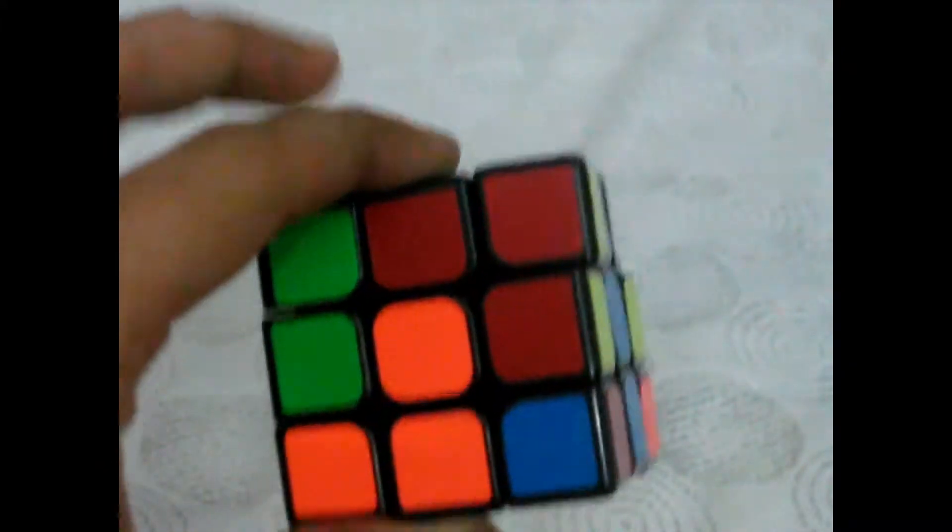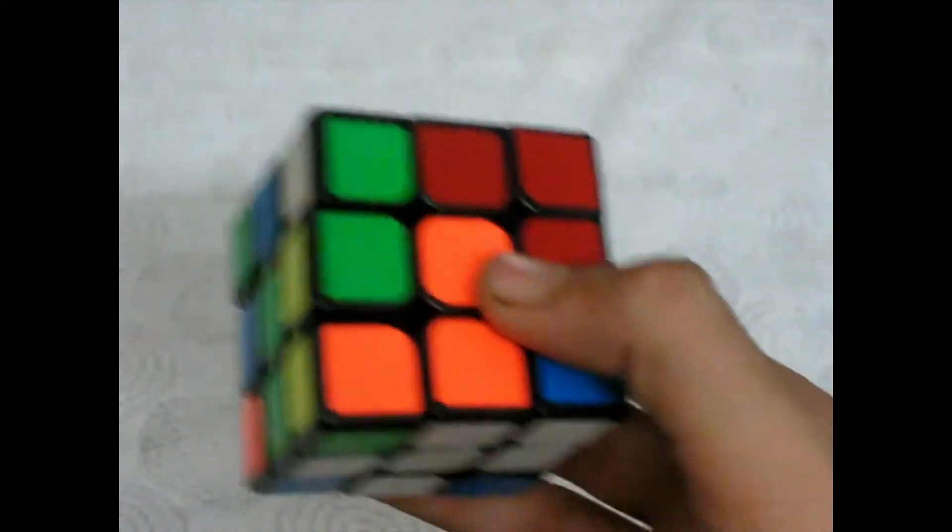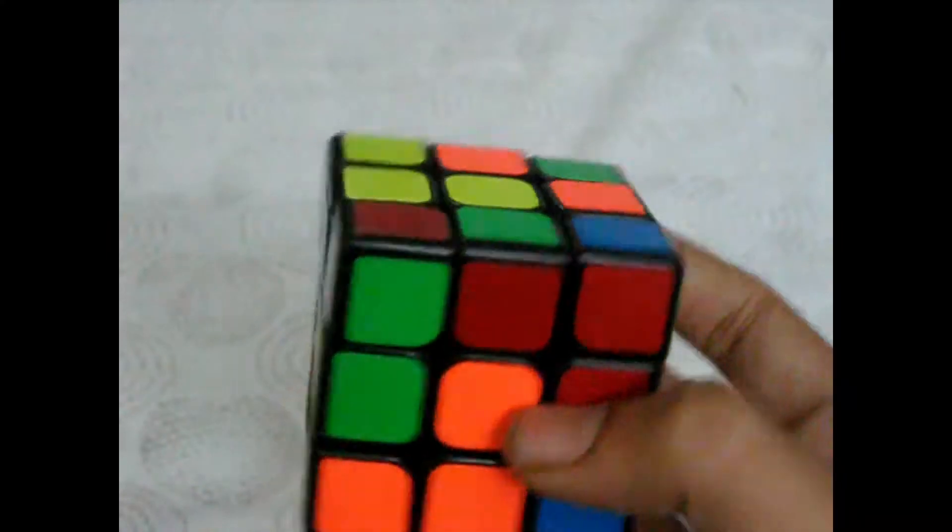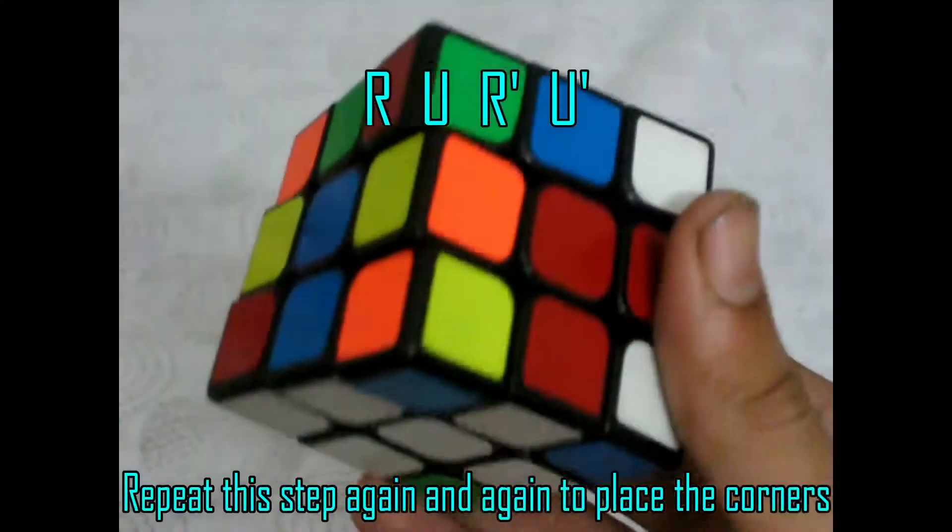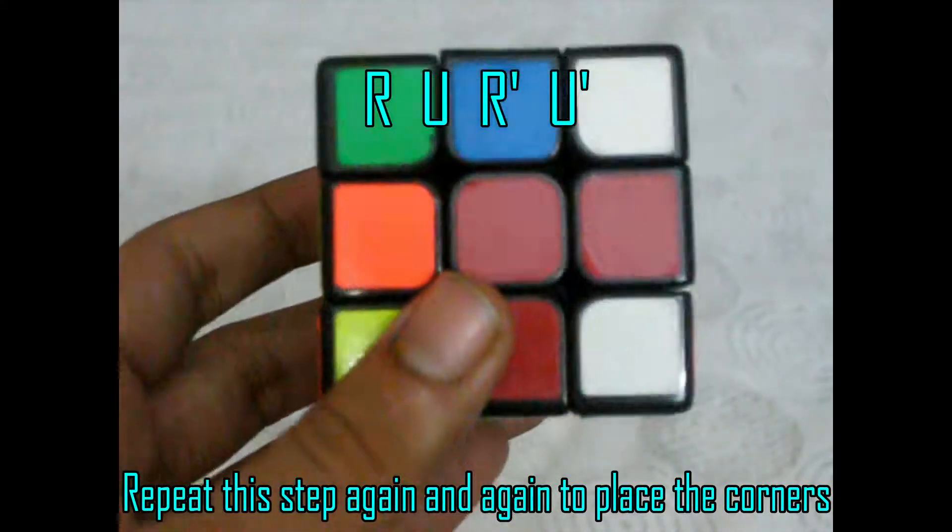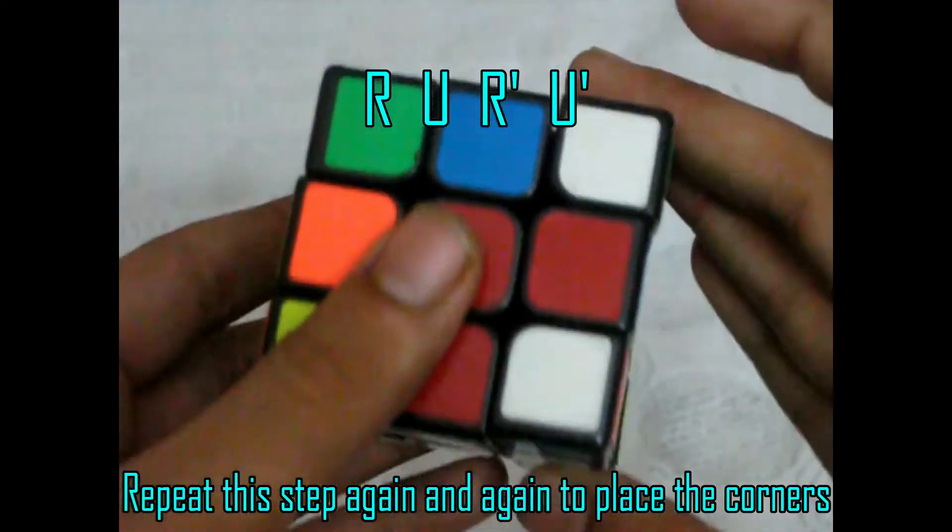Now we can move on to step 2, or step 3 we can say, when we have to place the corners at the right places. To do this you just have to remember one simple algorithm: r u r prime u prime. If you just keep on repeating this algorithm your corner will be solved, like see this.